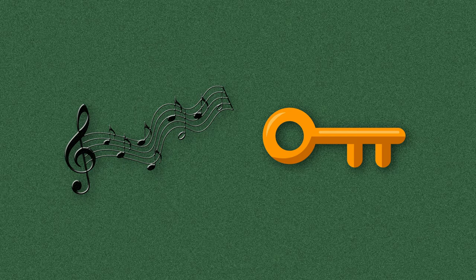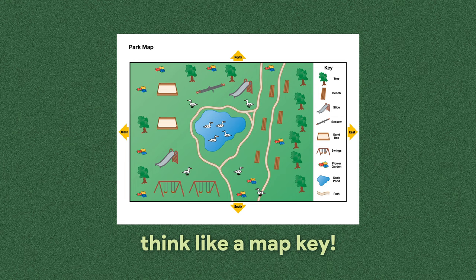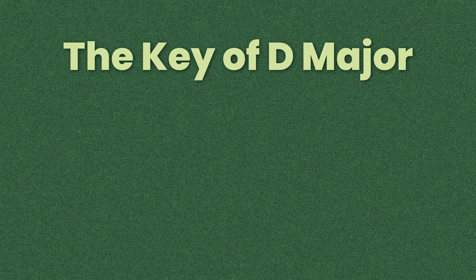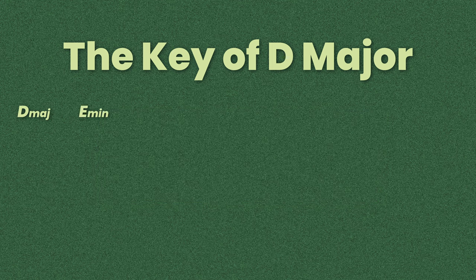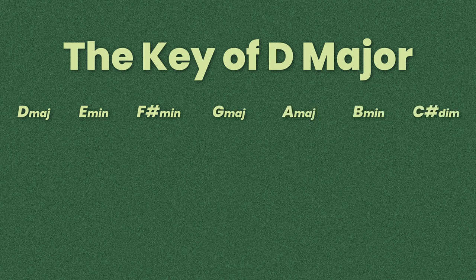Okay, I'm gonna throw some stuff quick at you, so feel free to pause if you need to. Every song is in a key, and the key tells you which notes belong in the song. It also tells you what chords to play to sound like they belong in the song. Something that would be out of key is like your friend trying to sing at a karaoke bar. So let's say we're in the key of D major, for example. The chords diatonic to that key would be D major, E minor, F sharp minor, G major, A major, B minor, and C sharp diminished.